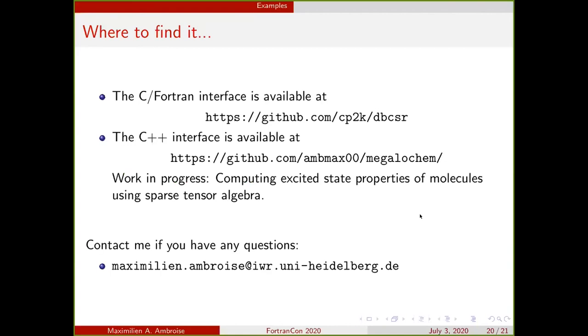The C-Fortran interface is available at cp2k/dbcsr. The C++ interface can be seen at my project page called MegaMolBAR, but it's a work in progress. It's not ready yet, but just so you can see how I did the templating. At the end, I want to be able to compute excited state properties of very large molecules with the power of Fortran and C++ combined.